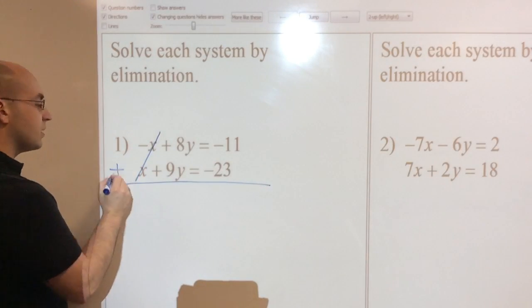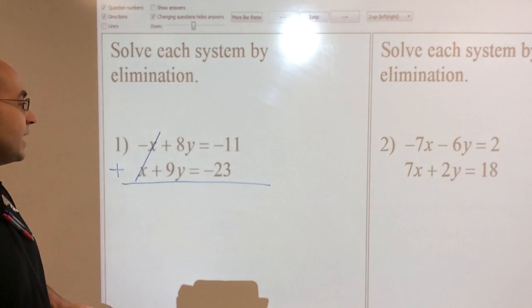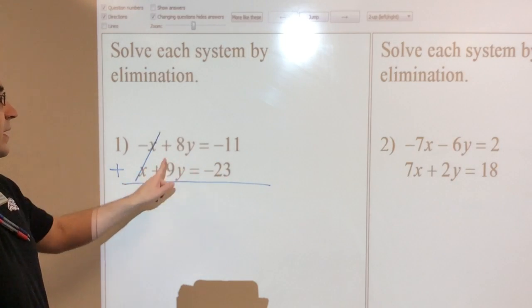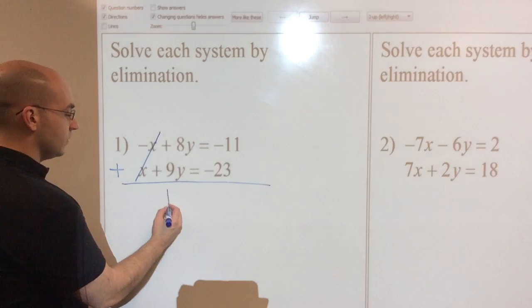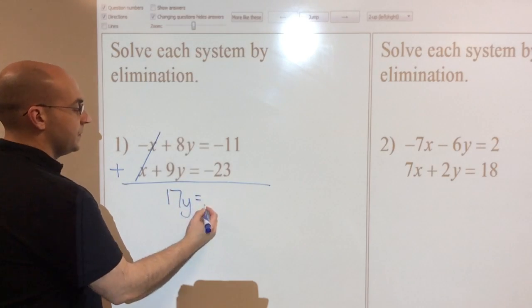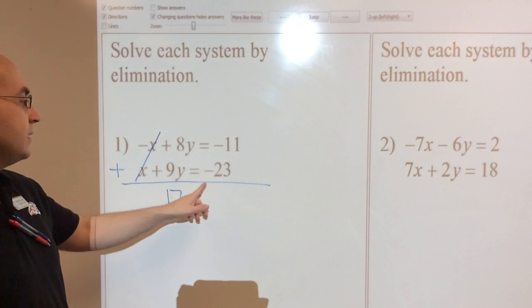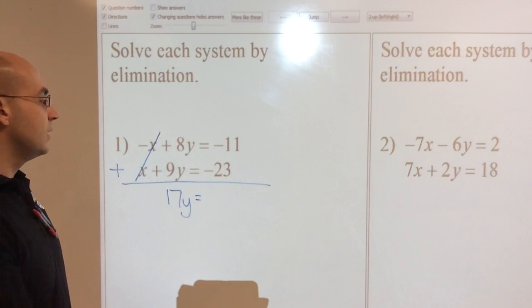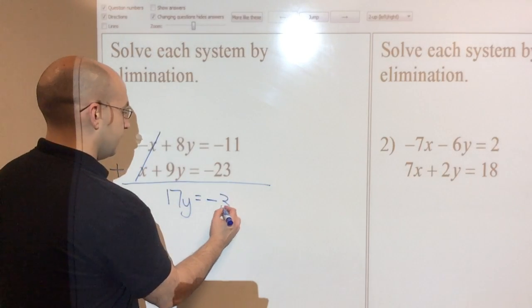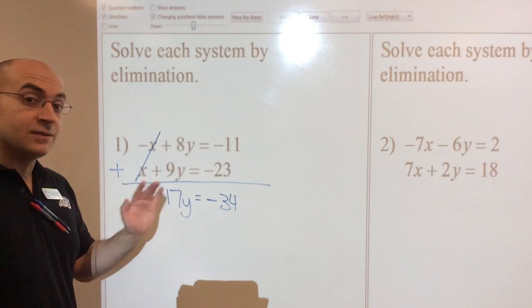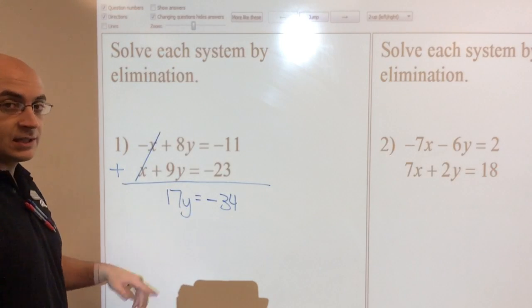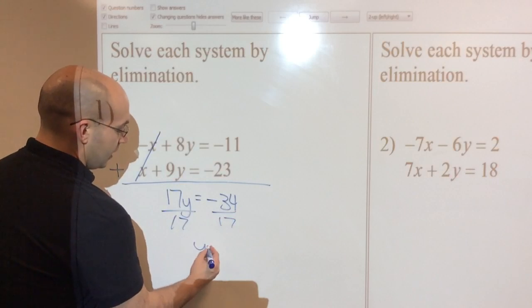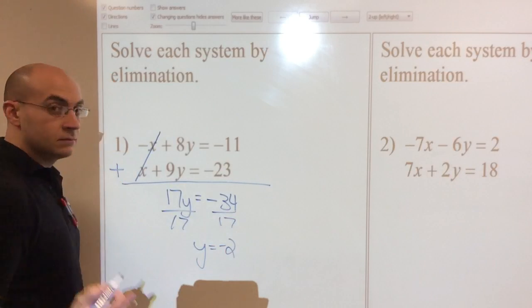Draw a line underneath. And this is also called the addition method. So I'm going to add everything else down. So positive 8y plus 9y is 17y. And negative 11 plus negative 23, or negative 11 plus a negative 23, I should have a negative 34. So now this is an easy one-step division problem because I'm trying to get 17 away from the y. Divide by 17 on both sides. And I'm left with y is going to equal negative 2.